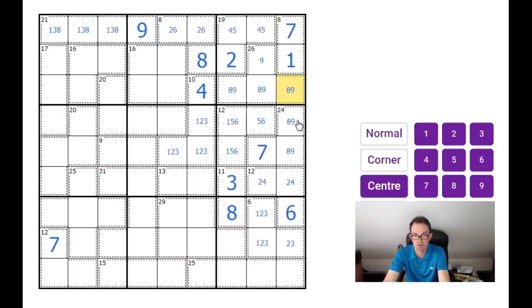This cannot be 8 or 9. Now look, there's a little trick we can do here with this 9. Look at the central box. Where can a 9 go? Well, it obviously can't go in these three squares. But it can't go in the 13 cage now because we've got a 4 in the row. So 9 can only go there.